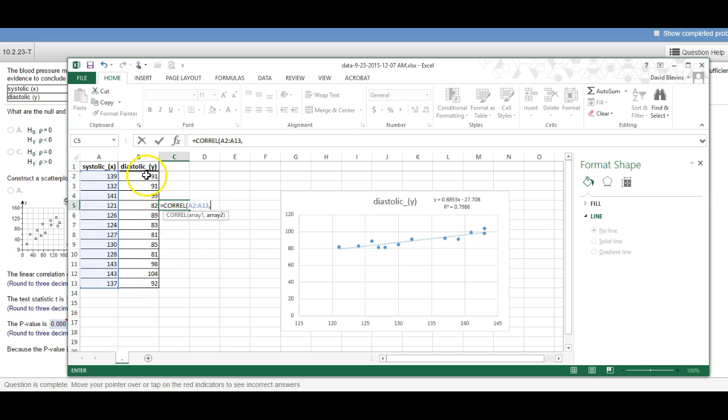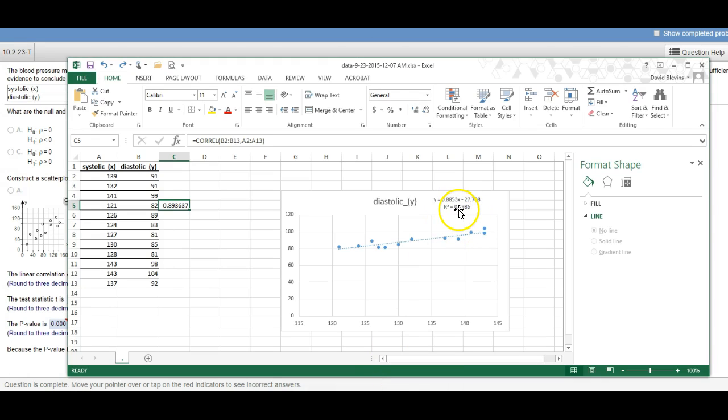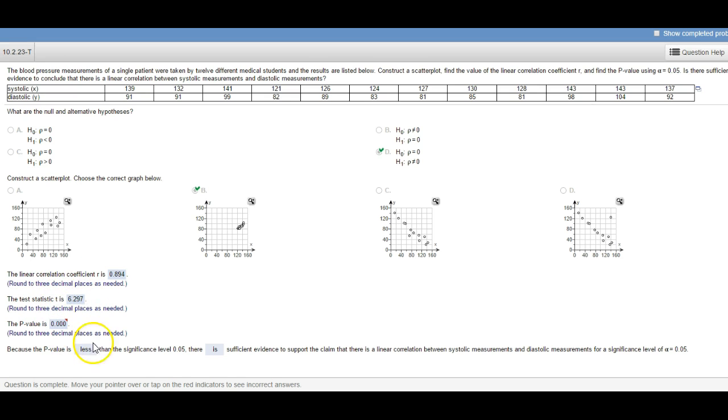So double-click there. It says array one, that's like the first column your x's, and then comma, array two, that's your y's. Then I hit enter and there's 0.894. You could also do it backwards, y first and then x, it doesn't matter. So the correlation is 0.894. Now again, the trendline is r squared, so if you use the trendline feature here, just make sure to take that square root.